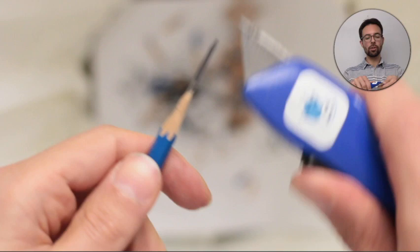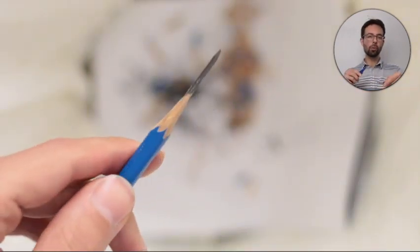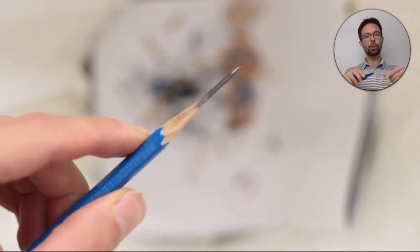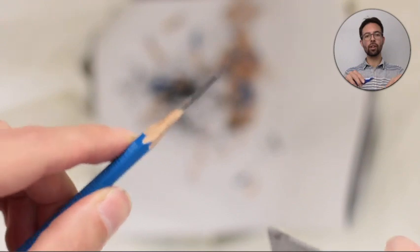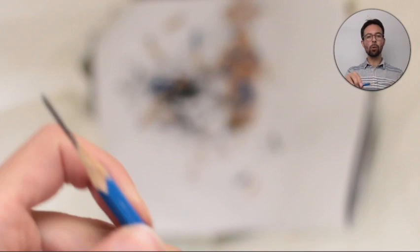And number two is they just stay sharp longer. And you can draw in such a way that you twist the pencil as you draw and you can actually sharpen as you're drawing and keep these things sharp for quite a while. Step one complete.